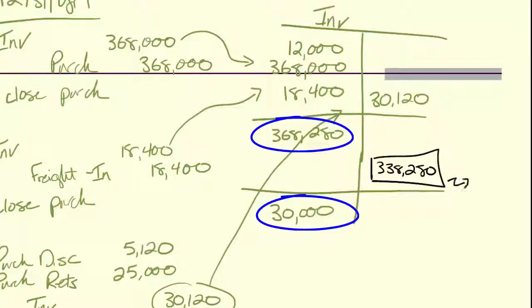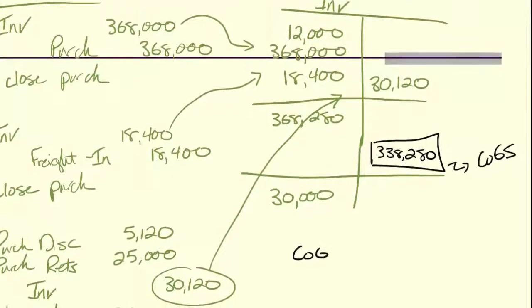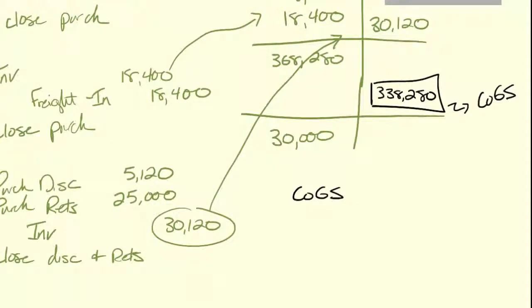And this is cost of goods sold. And I would do my journal entry. Cost of goods sold, which is our fancy way of saying inventory expense. So this is $338,280. And I credit the inventory $338,280. This is to record cost of goods sold. This one's not a closing entry. I can't call it a closing entry because I haven't zeroed the closing. So that's the t-account method.